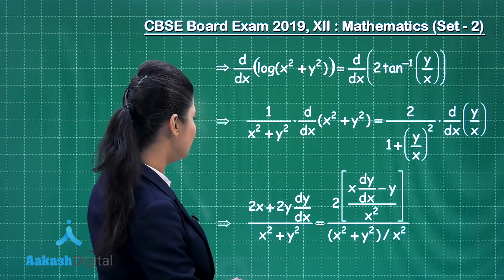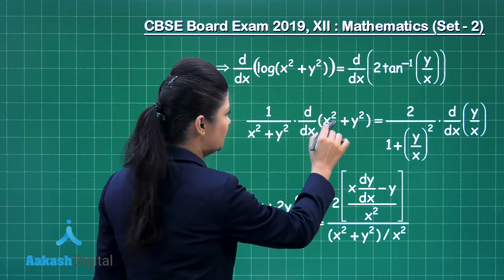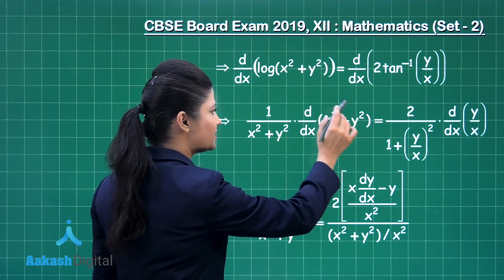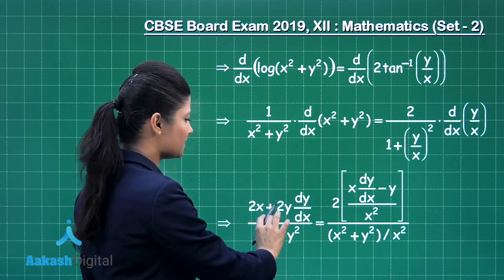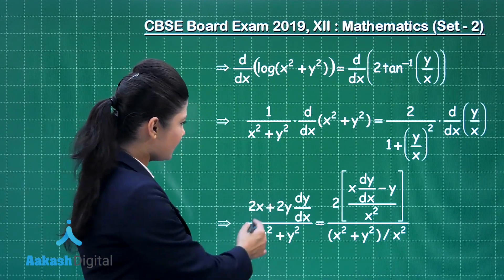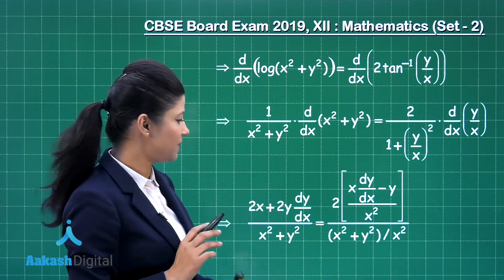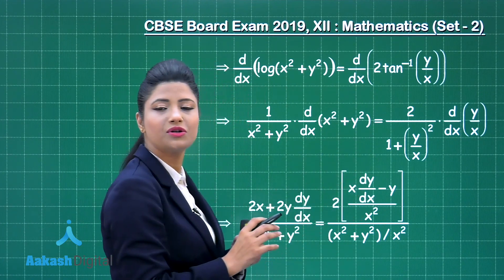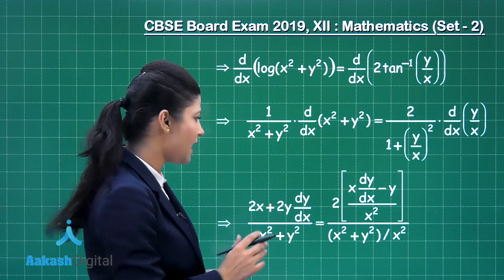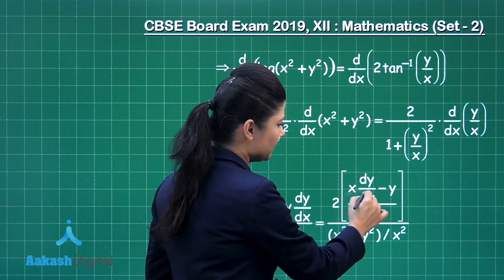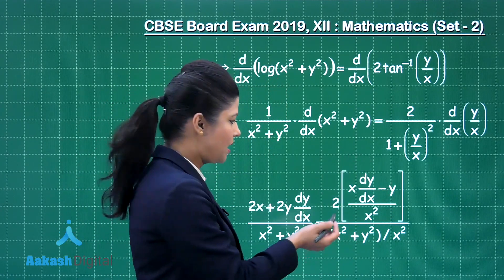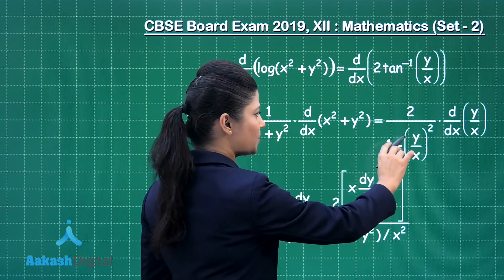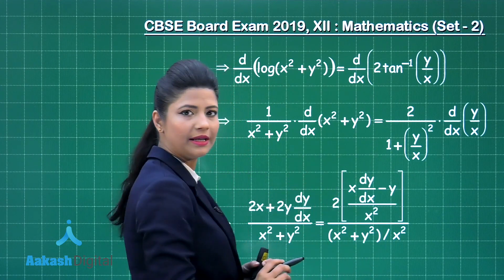When you differentiate, x squared differentiated with respect to x gives 2x, and y squared differentiated with respect to x gives 2y dy/dx, with x squared plus y squared in the denominator. Applying the quotient rule formula for differentiation of u by v with respect to x, I get x times dy/dx minus y times dx/dx which is 1, upon x squared. In the denominator, when you simplify, you get x squared plus y squared upon x squared.